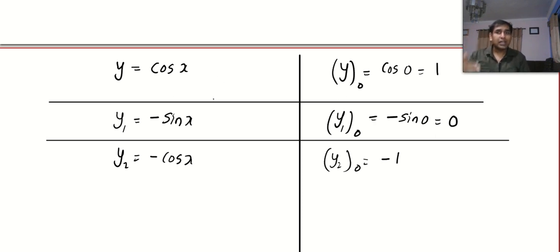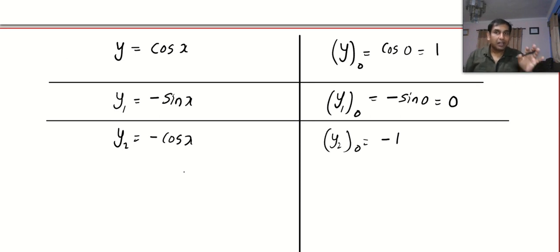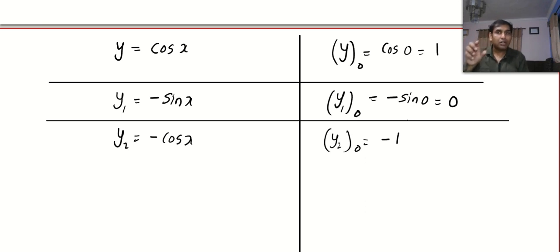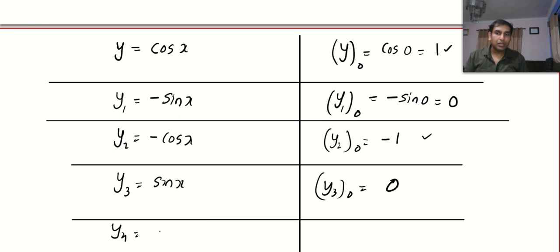You might be wondering how many times we have to differentiate. It is a norm to write three non-zero terms. Sometimes in the examination they will mention it; if not, three non-zero terms is the standard. I can see I have two non-zero terms so far. Next, y3 = sin x, and y3 at 0 = 0. Since I still only have two non-zero terms, I go for y4. The derivative of sin x is cos x, so y4 at 0 = cos 0 = 1.